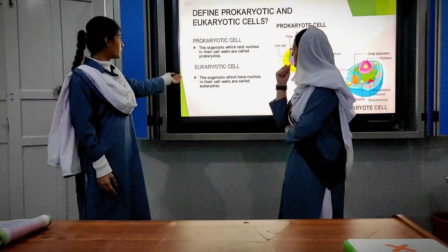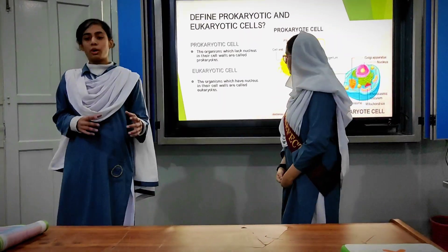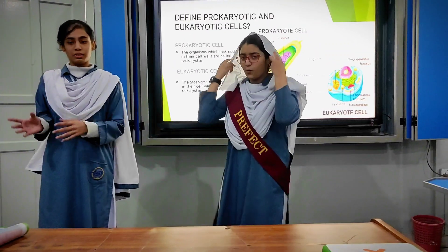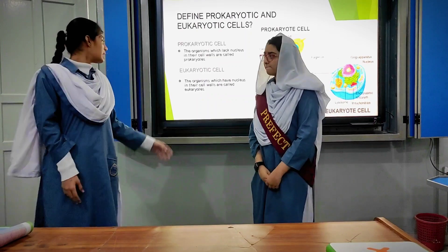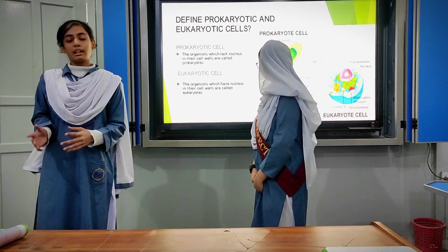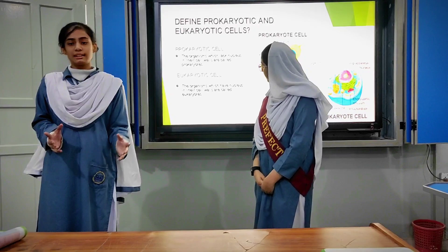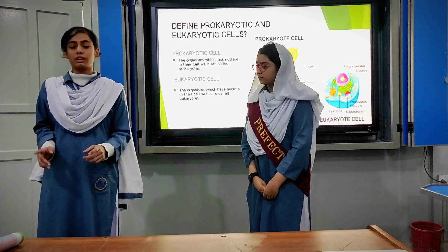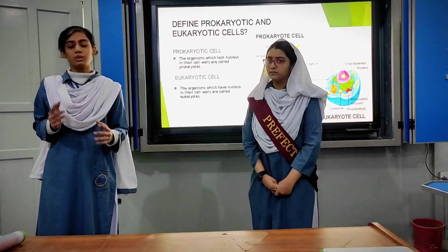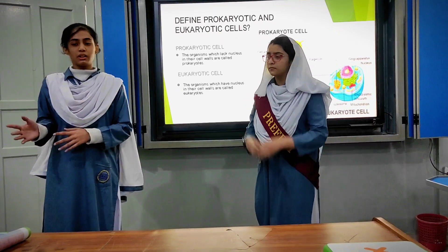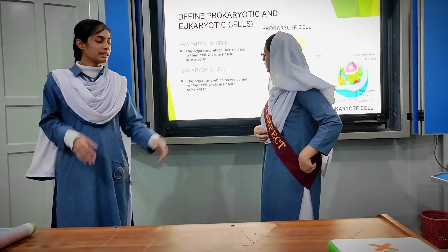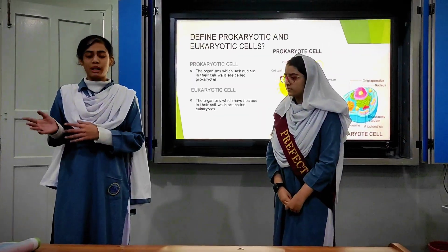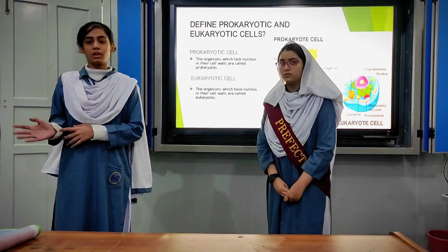Now I will define prokaryotic and eukaryotic. From the Greek: 'pro' means before and 'karyon' means nucleus. An organism that lives without a nucleus is called prokaryotic. Eukaryotic: 'eu' means truly or well, and 'karyon' means nucleus — so an organism that has a nucleus is called eukaryotic. Prokaryotes are always unicellular, while eukaryotes are often multicellular. The DNA is stored in the cytoplasm of prokaryotes, while in eukaryotes it is stored in the nucleus.